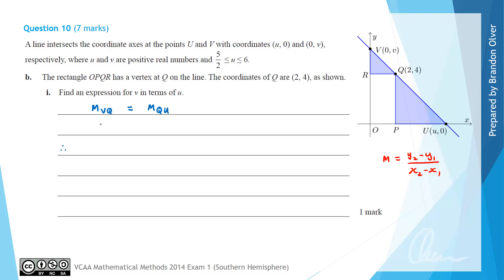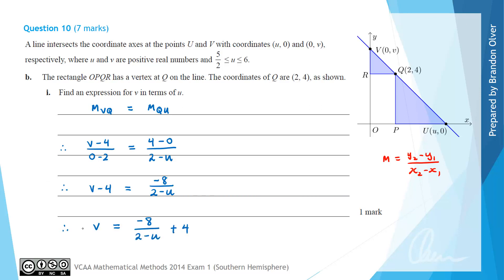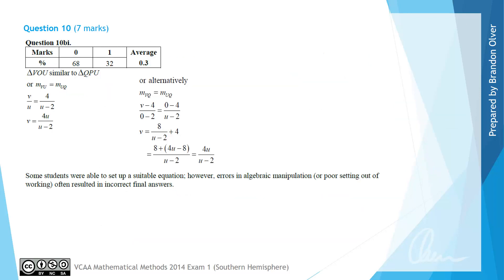Using the gradient formula, the gradient of VQ equals (V − 4)/(0 − 2), and the gradient of QU equals (4 − 0)/(2 − U). Setting these equal and simplifying: V − 4 = −8/(2 − U), so V = −8/(2 − U) + 4. From the examiner's report, 32% of students got the mark; many set up a suitable equation but made algebraic errors due to poor working out.